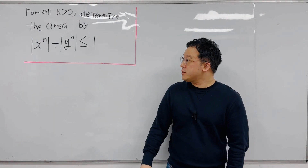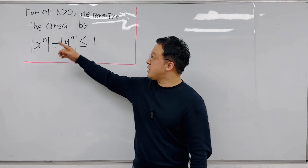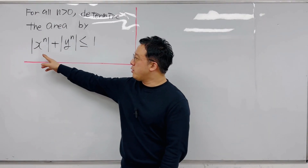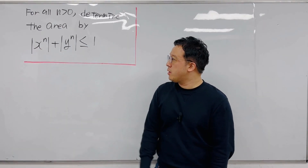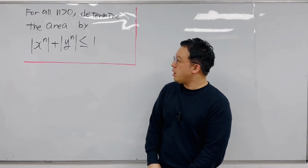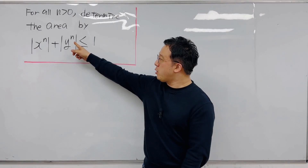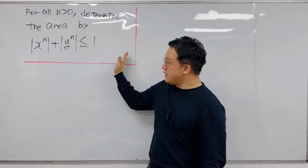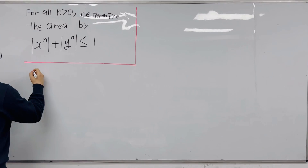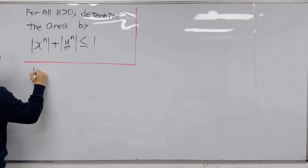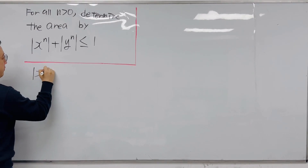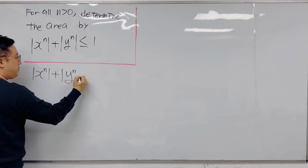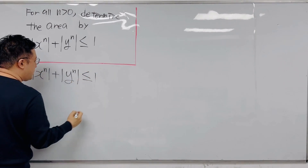Okay, here's the question. For all positive values of n, determine the area defined by |x|^n + |y|^n ≤ 1. So basically, this expression |x|^n + |y|^n is less than or equal to 1.